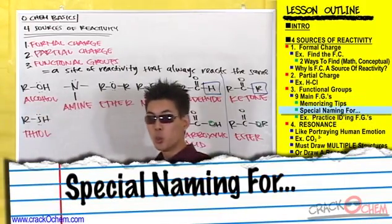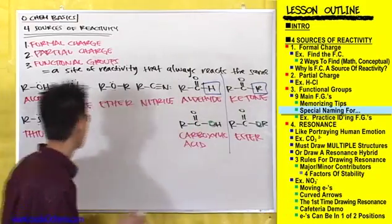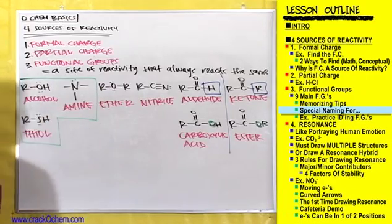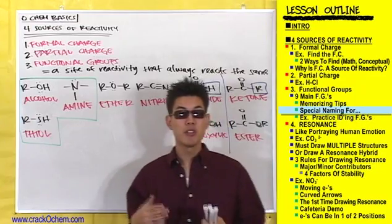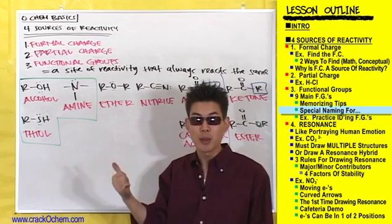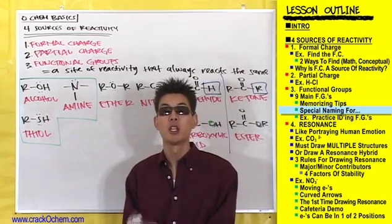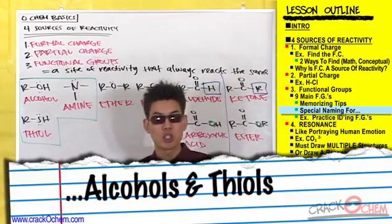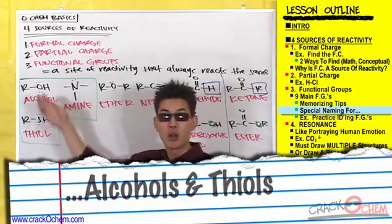Go ahead and put a box around these first three functional groups — alcohol, thiol, and amine — because we have a special way of naming these. We classify these as being either primary, secondary, or tertiary, depending on how many alkyl groups are present on them. Alcohols and thiols are classified the same way.